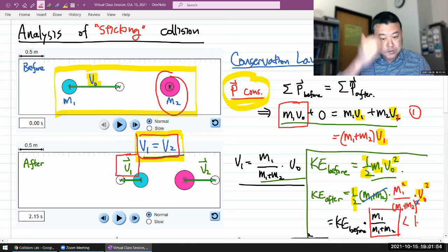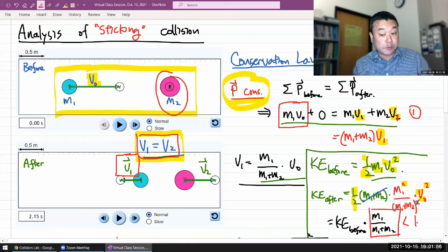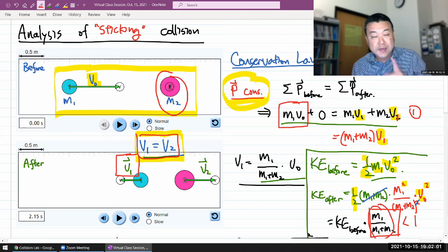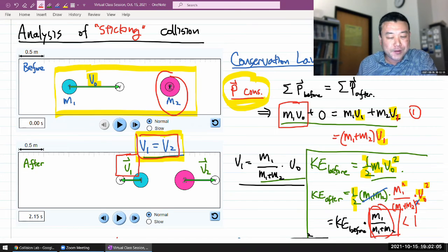In the scenario that you saw before, where M2 is equal to M1, in that scenario, you see that this ratio will become one-half. And that actually explains why our kinetic energy was going down to a half.